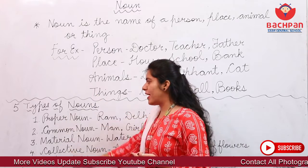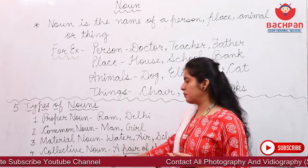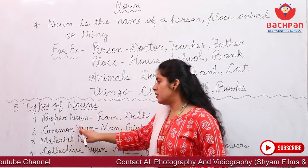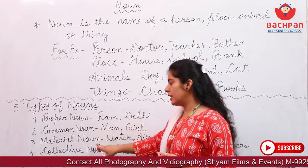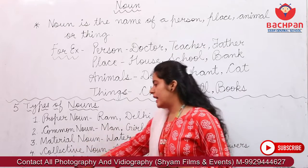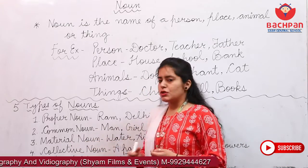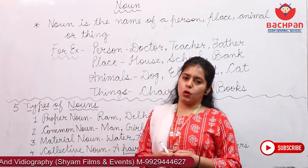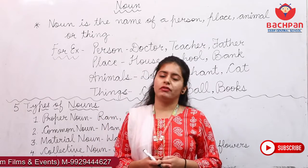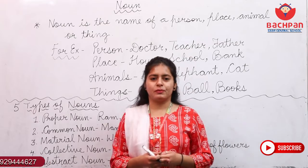So, these are the five types of nouns we have learnt: Proper Noun, Common Noun, Material Noun, Collective Noun, and Abstract Noun. Kids, I hope you will all learn it, and in the next class we will learn more about nouns. Thank you.